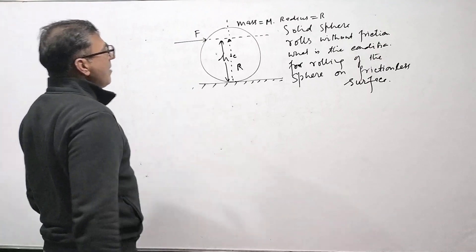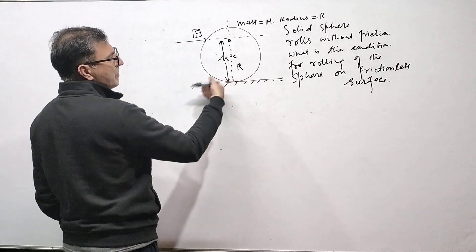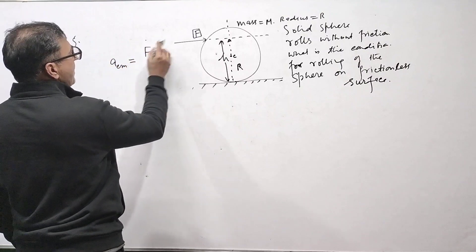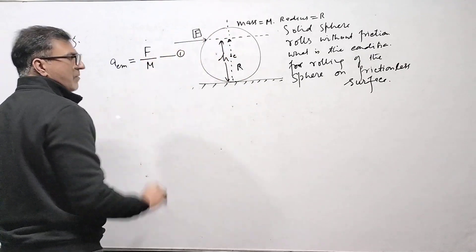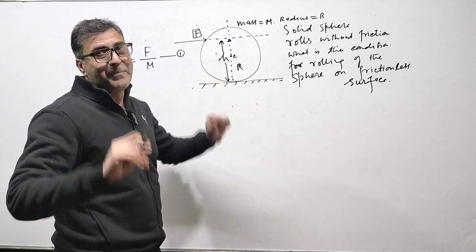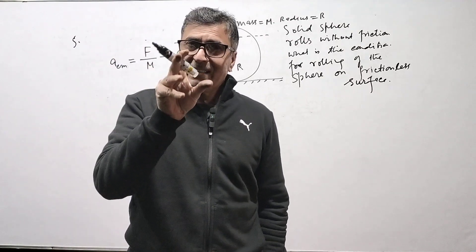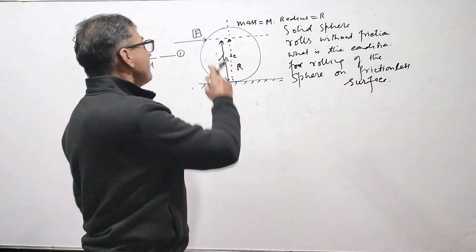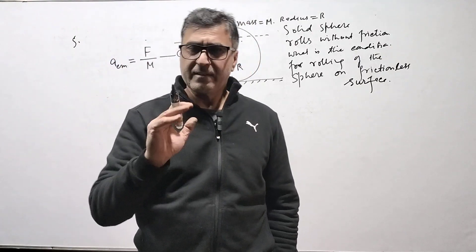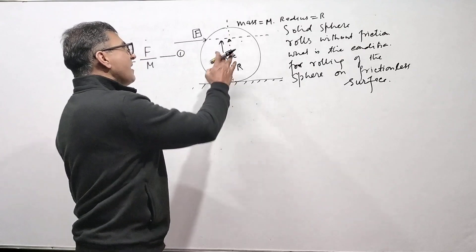When force F is applied, since there is no friction, the only horizontal force is F. The acceleration of the center of mass is a_cm = F/M. This force also creates a torque about the center of mass. The torque is F·(h − R), since the force is applied at height h and the center of mass is at height R. This torque produces an angular acceleration α.